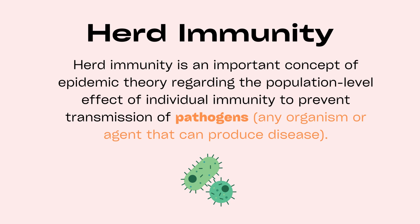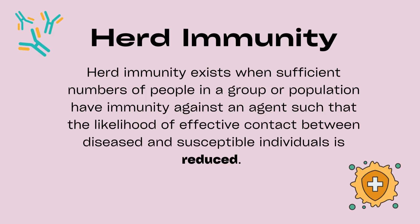Let's move on to the topic of herd immunity. What is it? Herd immunity is an important concept of epidemic theory regarding the population-level effect of individual immunity to prevent the transmission of pathogens. The term pathogen refers to any organism or agent that can produce disease. Herd immunity exists when sufficient numbers of people in a group or population have immunity against an agent, such that the likelihood of an effective contact between diseased and susceptible individuals is reduced.